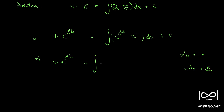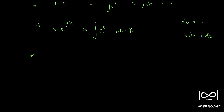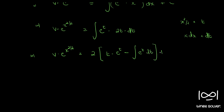So this becomes integral of e raised to t into x squared, which is 2t, giving us 2t into dt. So v into e raised to x square by 2 equal to 2 into the integral of t into e raised to t. We do integration by parts: first function t into integral of e raised to t, minus differential of first which is 1 into e raised to t dt, plus c.